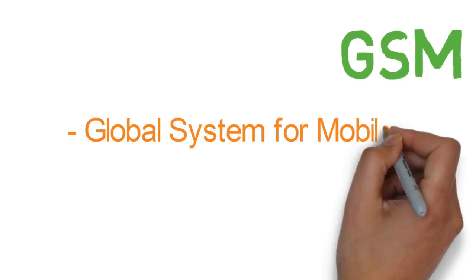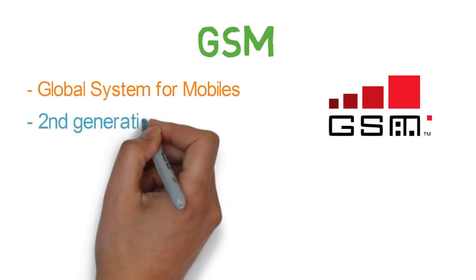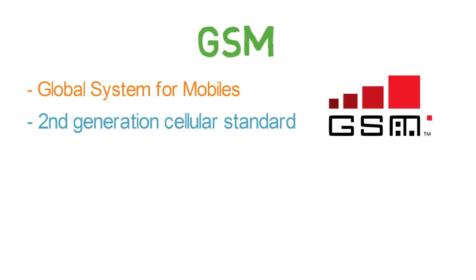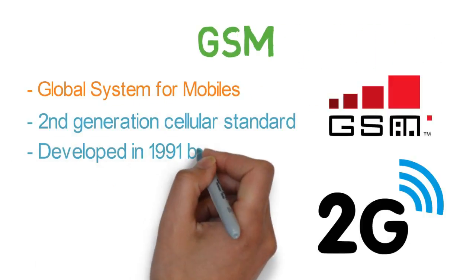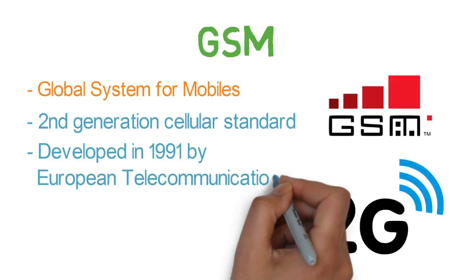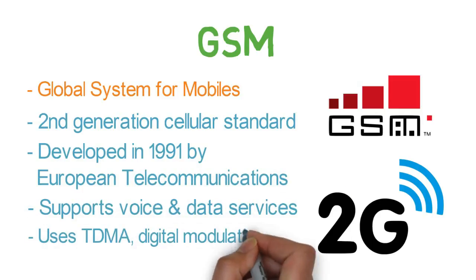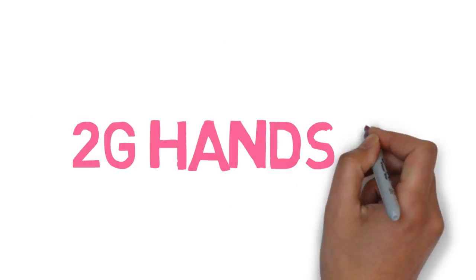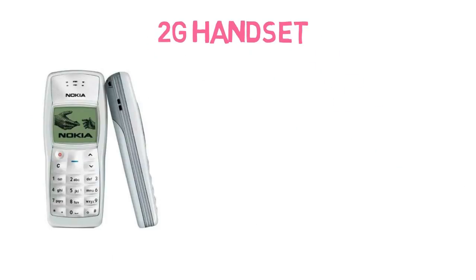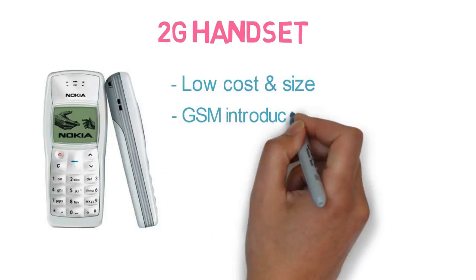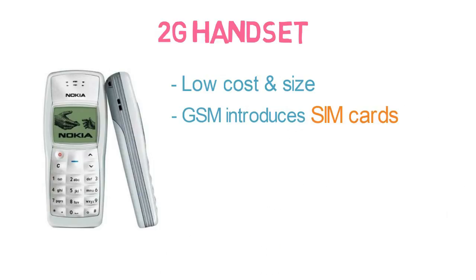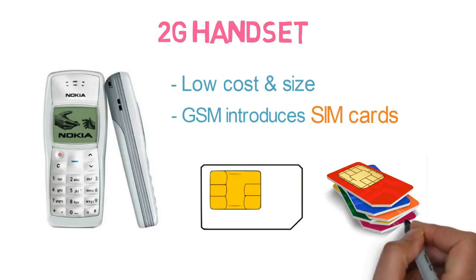The cons of 1G were replaced by GSM. Global System for Mobile Communication — GSM — is a second-generation cellular standard developed in 1991 by European Telecommunications to support voice and data services. It uses digital modulation with TDMA, while 2G handsets were cheaper and smaller in size. GSM was the first generation to introduce SIM cards.